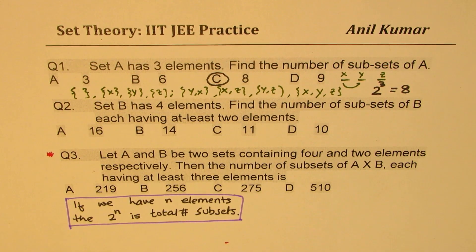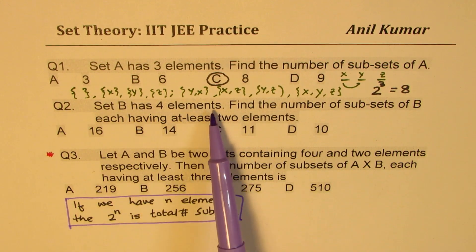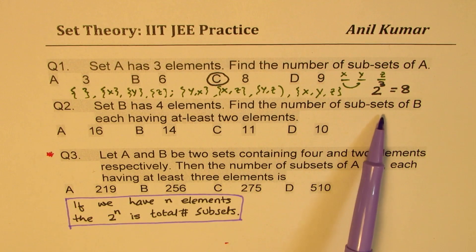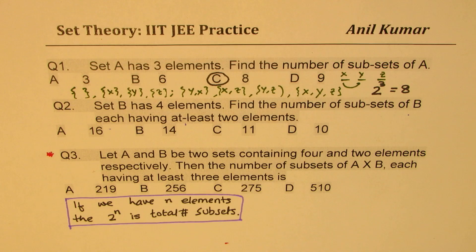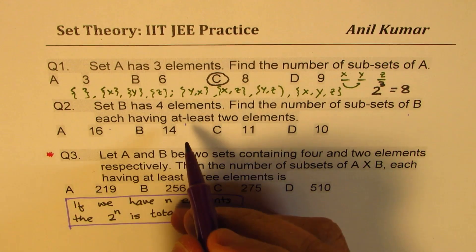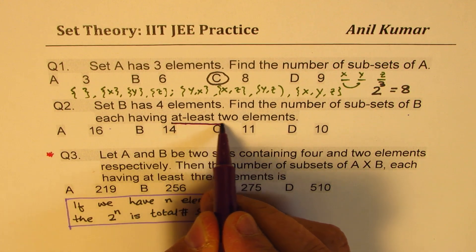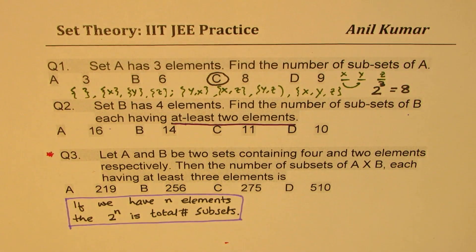So we got the first one. Let's go to question number 2 now. Set B has four elements. Find the number of subsets of B each having at least two elements. Now this time we are giving a condition. The condition is at least two elements. That means we should take away those which have no element or which have one element.